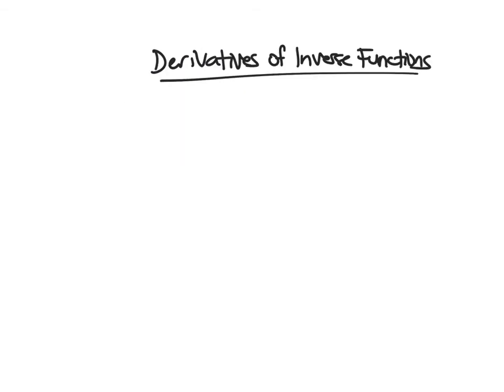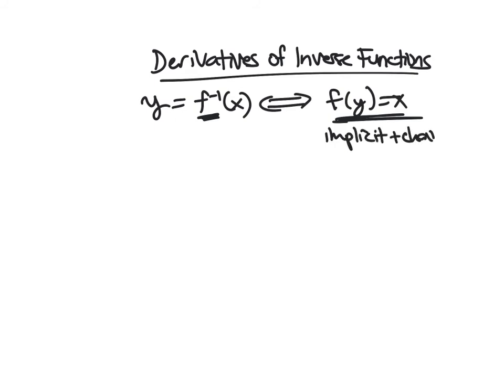So now we'll talk about derivatives of inverse functions. So we'll talk about general ones first and then kind of focus on trig. So if I have y is f inverse of x, then this means the same thing as saying that f of y is x. And the issue is to take the derivative of the left side, I need to know how to take the derivative of f inverse. I don't know how to do that. But if I turn it into something where I just have f, I can talk about its derivative without worrying about the inverse part. So here I have a function of y on the inside and y is something that depends on x. So I'm using implicit differentiation here and the chain rule.